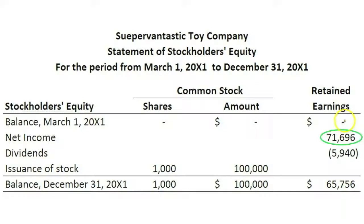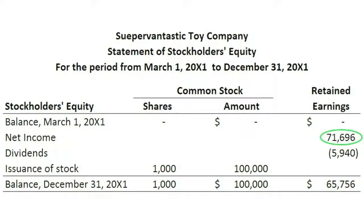We started with no retained earnings because it was a brand new business, but then we added this year's net income and deducted this year's dividends to arrive at the ending retained earnings, which will go on the balance sheet. Common stock — we just issued a thousand shares for $100,000 to give our ending common stock. These ending balances are going to appear on our balance sheet.